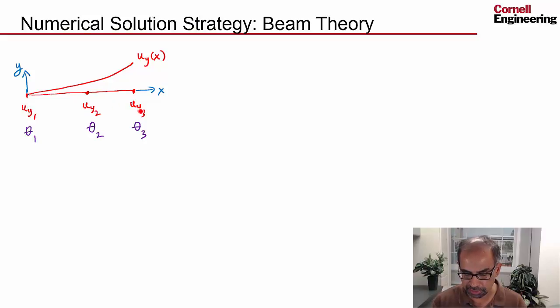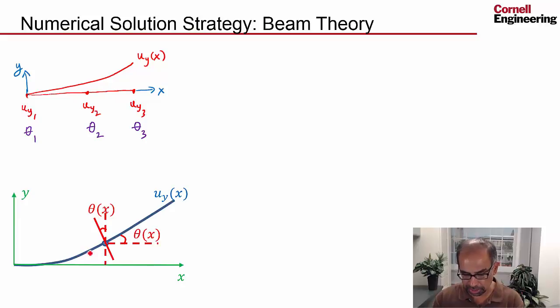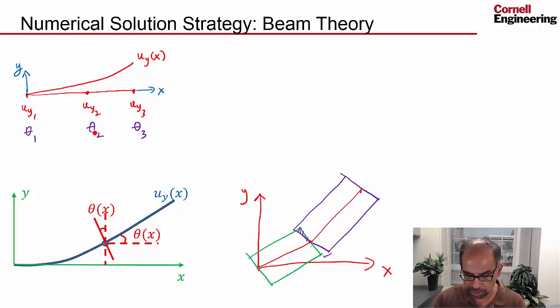And we determine the transverse displacements there. And it turns out we also have to calculate the rotations of the cross sections at those locations. Because the rotation is related to the slope, and if we don't calculate the rotations, then the slope can be discontinuous, which means that you can have two rotations of the cross section at the same location. And you get this non-physical behavior. So that's why this is key.